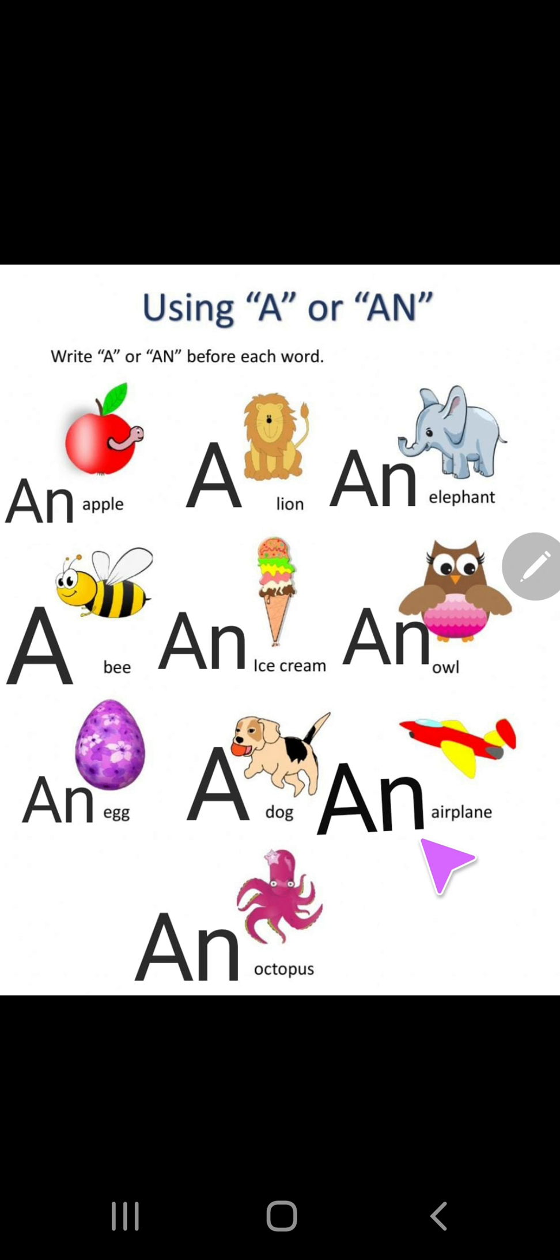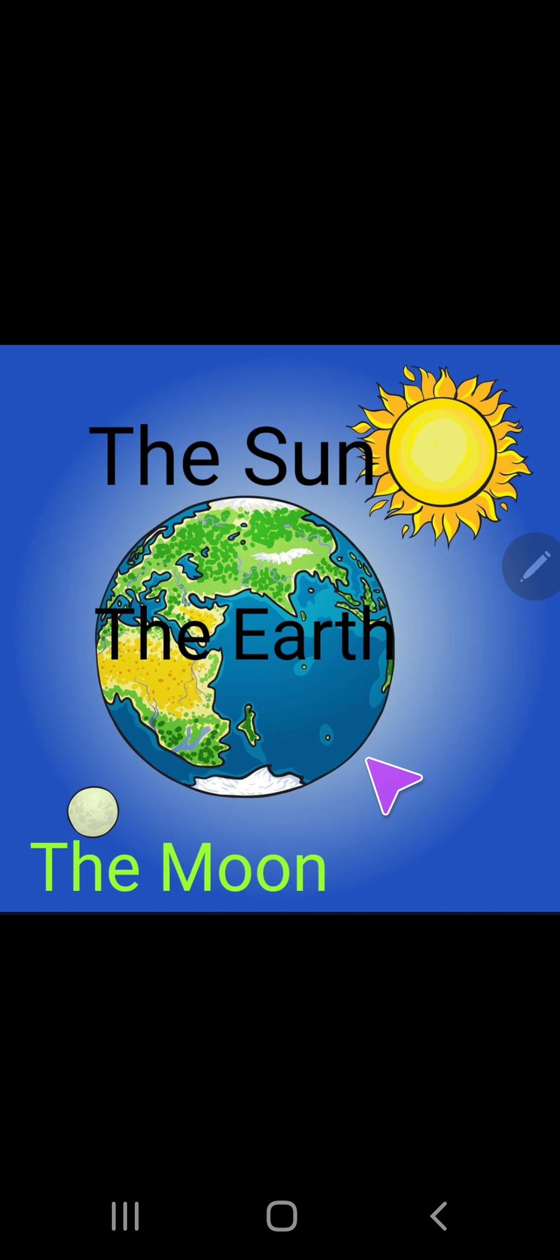Airplane. So A is the vowel. We use an. Octopus. We use an because O is the vowel.